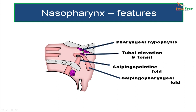Occasionally, remnants of Rathke's pouch may be found in the roof of the nasopharynx, which can give rise to a pharyngeal hypophysis, since Rathke's pouch develops into the adenohypophysis or anterior pituitary. The pharyngeal bursa may also contain notochordal remnants if there was adherence between the pharyngeal wall and the notochord, potentially resulting in cartilaginous tumors.